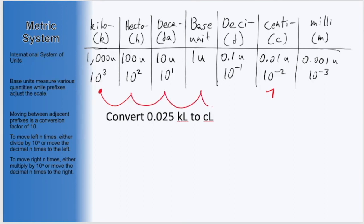and to do that we'll move one, two, three, four, five spaces across this table. With that in mind, we can either multiply by 10 to the fifth, or much more simply, take our number and move the decimal that many times in the same direction.